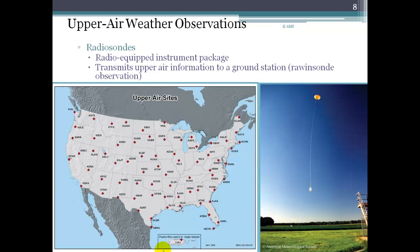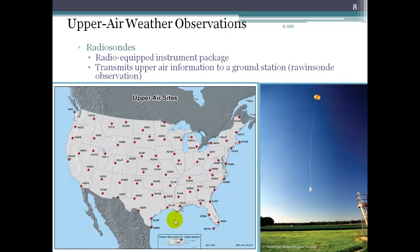In addition to surface observations, we also have upper air observations, and these are collected primarily with radiosondes. A radiosonde is a little radio-equipped instrument package tied to a big weather balloon. There's an instrumentation package with temperature and pressure sensors and a GPS chip so that it can be tracked. We have these different locations in the United States from where we launch these radiosondes at specific times during the day. As they make their way up to the upper levels of the atmosphere, we can get a sense of what's going on up there, specifically in terms of pressure and temperature.